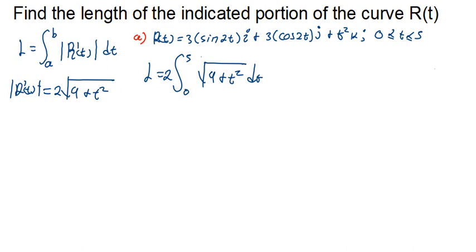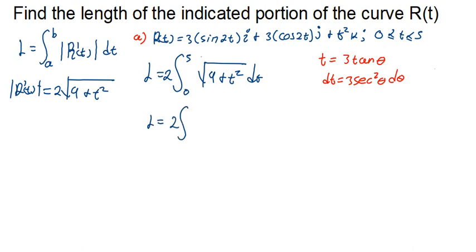I'm going to use trig substitution. I'm not picking tan at random — there's a reason. Let T = 3tan(θ), which means dT = 3sec²(θ) dθ. So our L equals 2 times the integral from 0 to 5 of √(9 + 9tan²(θ)) times 3sec²(θ) dθ.